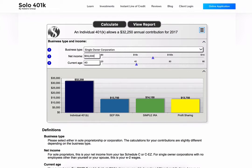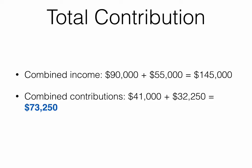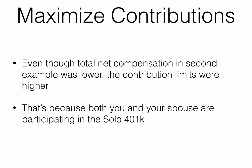With your combined net compensation of $145,000 — that's $90,000 in earnings for you and $55,000 in earnings for your spouse — you are able to make a grand total tax-deductible contribution of $73,250. That will make a huge dent in your remaining taxable income. You might have noticed that even though the total net compensation in our second example was less than the first example, the contribution amounts are much higher.